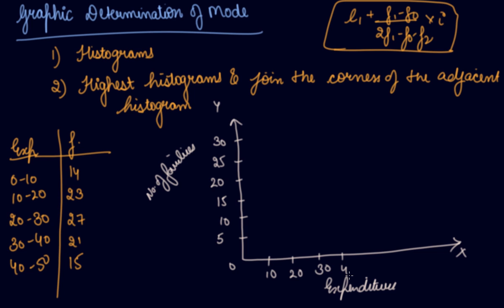Now you will make your histograms. From 0 to 10, there are 14 families—this is your first histogram. From 10 to 20, there are 23 families.